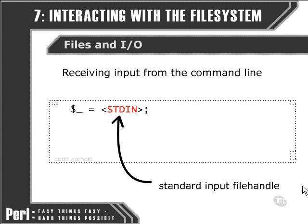The standard input file handle, as soon as we reference it using the diamond operator to tell Perl to take in one line of text, effectively halts our Perl script and waits for the user to type in the line of text. Perl will know that the line is completed once they've hit the Enter key and that line has been finished off.